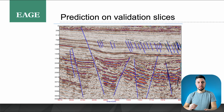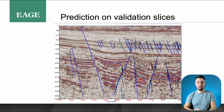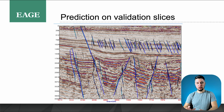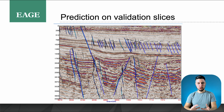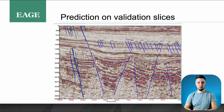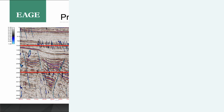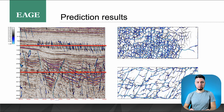The most interesting aspect is the ability of the neural network to generalize based on just one slice of data in each direction and apply that knowledge to the whole volume. We took inline 4245 for validation purposes. We see an almost identical match between the labeled data and the neural network's prediction, which assures us of the quality of the training process.